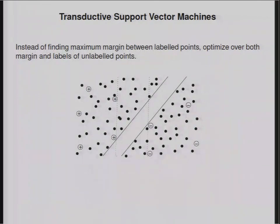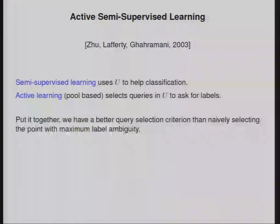It's the best margin you can get if you also label all your unlabeled points. Of course, labeling the unlabeled points is a combinatorially hard problem, so you have to relax this somehow to solve the transductive SVM. So what I want to spend the last few minutes, and it's very few minutes now, but I think I can give you the idea, is on active learning in a semi-supervised context.